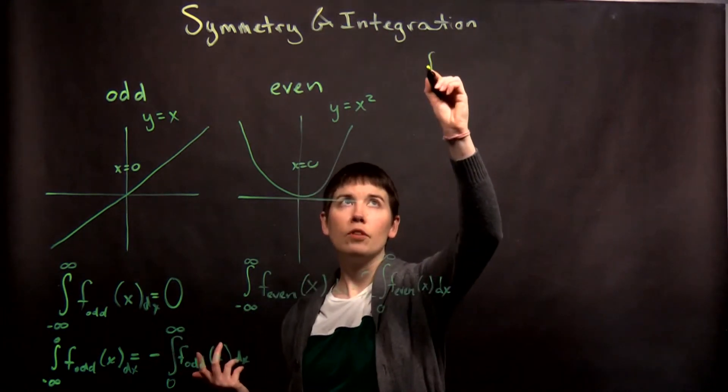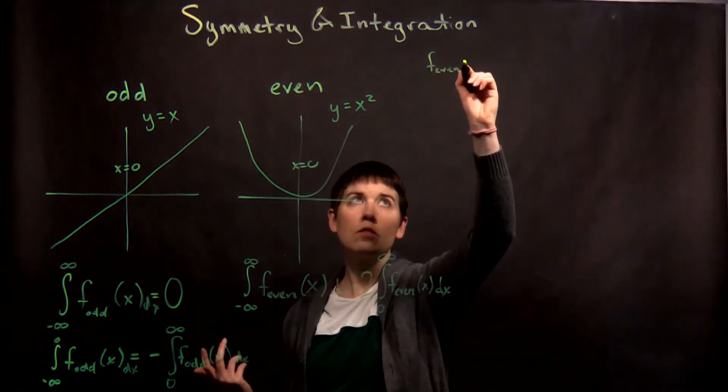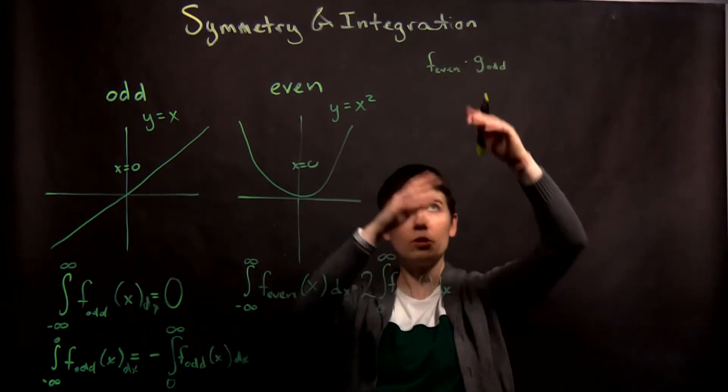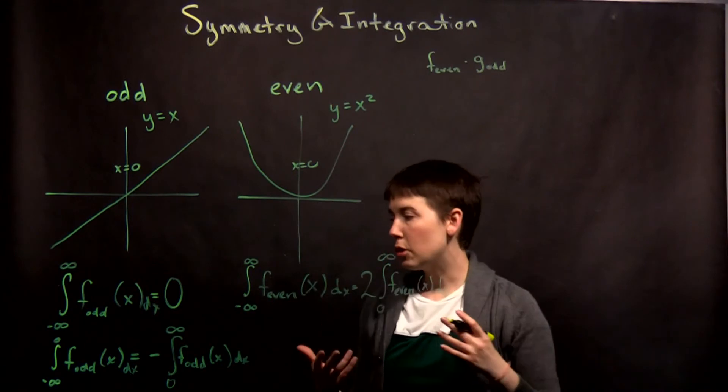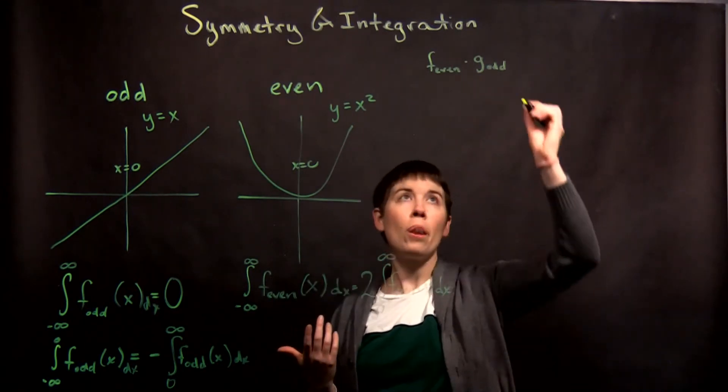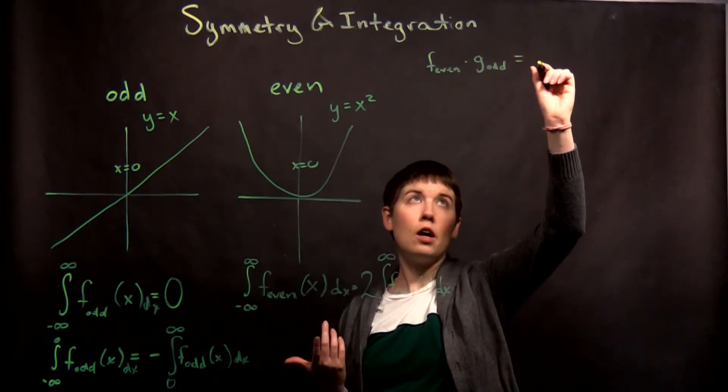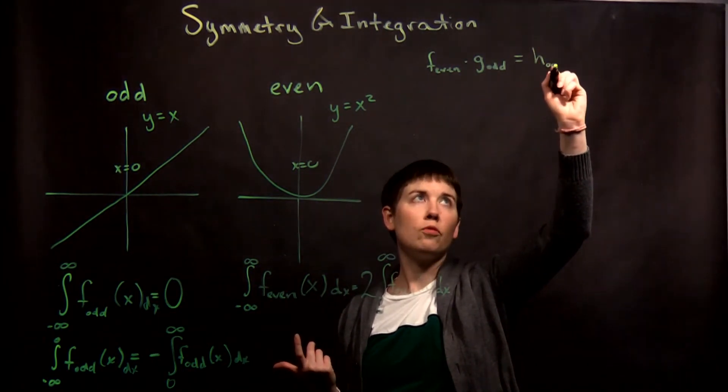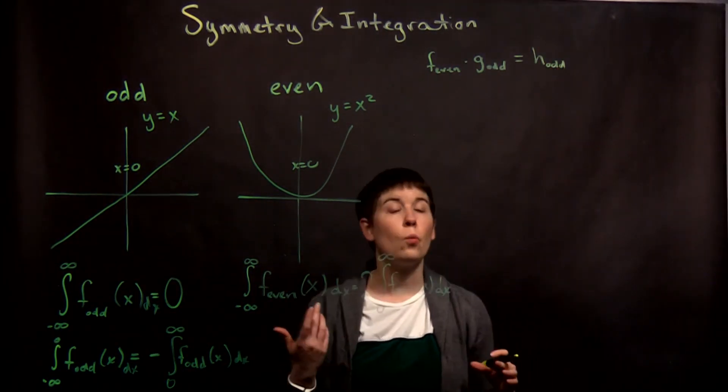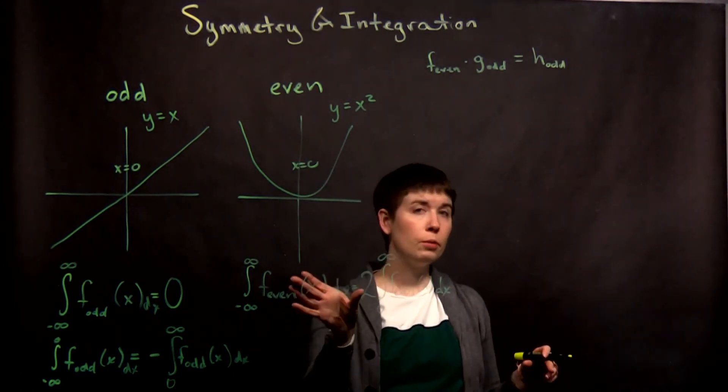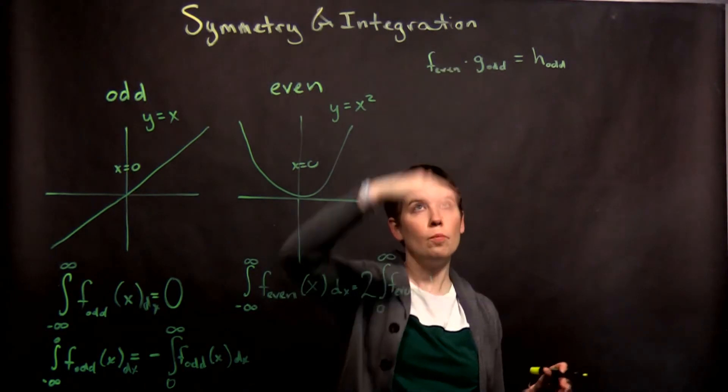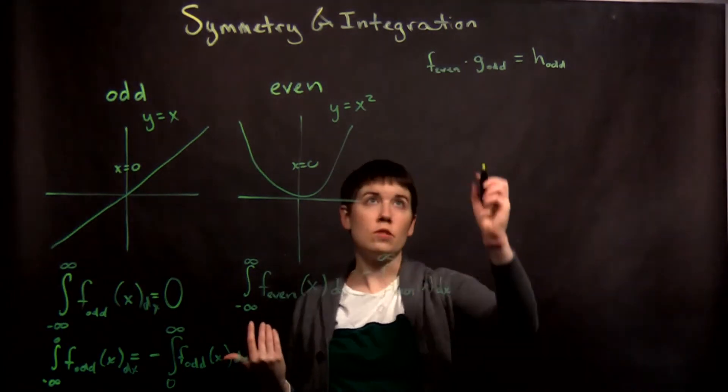So if I have an even function times an odd function, and I'm just switching from f to also use g, that when I multiply these functions together, that's going to give me odd symmetry. So this new function, if I call it h, that will in fact be odd. So why that's helpful is you can have a really complicated function here, and you can start to make some assumptions about what's going to happen.